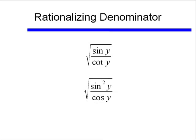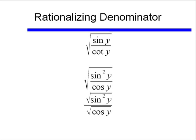And let's go from here. What I'll do next is I'll split up that square root, because I want to get rid of the square root sign in my denominator. Well to do that, I'm going to have to multiply my numerator and my denominator by square root of cosine y.